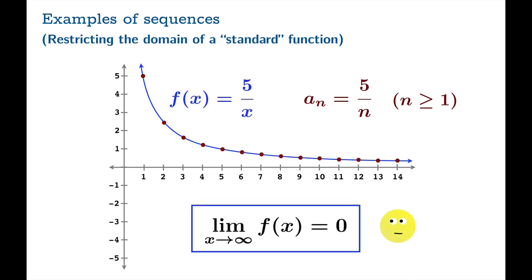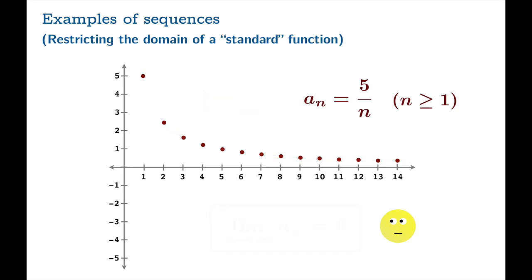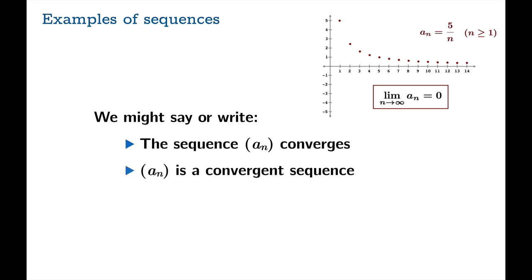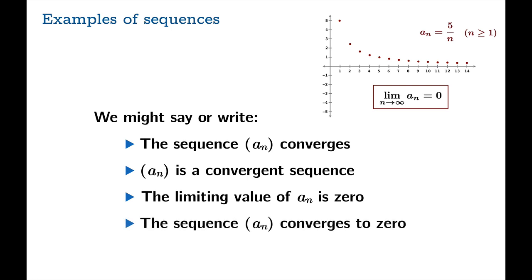Now, in our study of calculus, we know that this graph has a horizontal asymptote. The limiting value of f of x as x goes to infinity is 0. So what we're going to do is just borrow this fact. In fact, the sequence goes along for the ride. And we will write that the limiting value as n goes to infinity of a_n is 0. And so this is what we mean by a sequence converging. So here are the things we might say are right. We could say the sequence a_n converges or a_n is a convergent sequence. The limiting value of a_n is 0. The sequence a_n converges to 0 or a_n goes to 0 as n goes to infinity. That's a nice shorthand way to write this.